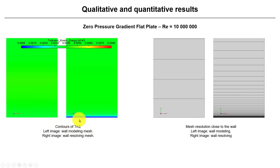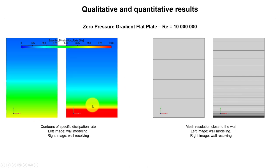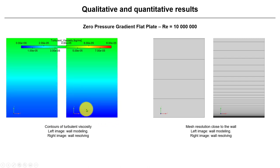In the wall-resolved case, the turbulent kinetic energy value is zero at the wall and grows away from it. The same applies for the dissipation — in the wall-resolved case the dissipation is much, much higher near the wall.